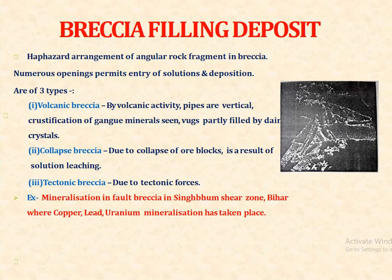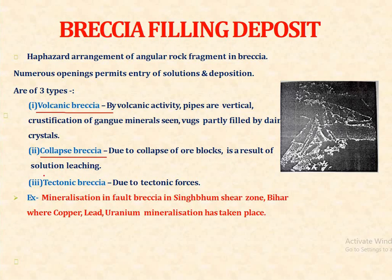Breccia filling deposits involve a haphazard arrangement of angular rock fragments in the breccia, where numerous openings permit entry of solution and deposition. These are of three types: first, volcanic breccia — formed by volcanic activity, with vertical pipes and crustification of gangue minerals; second, collapse breccia — due to collapse of ore blocks as a result of solution leaching; and third, tectonic breccia — formed due to tectonic forces. Mineralization in fault breccia in the Singhbhum shear zone of Jharkhand, where copper, lead, and uranium mineralization has taken place, is an example.